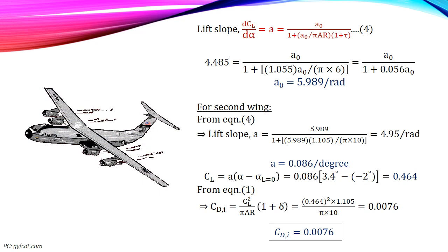Solving this equation for a0, we get airfoil lift slope a0 is 5.989 per radian.